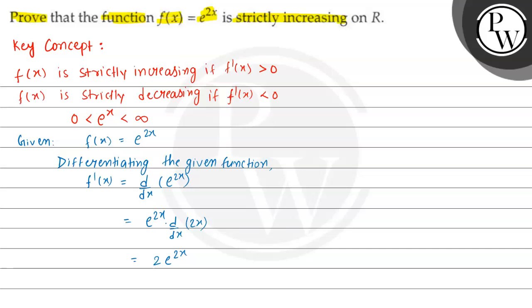2 is a constant and its value is greater than 0. Now, we have e to the power 2x. We have seen that e to the power x value is 0 to infinity. Therefore, we can say that f prime of x is greater than 0.